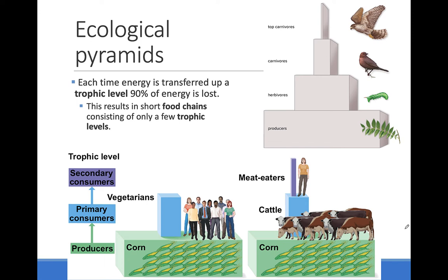When humans eat the plants directly, much more energy can be harnessed, allowing the same amount of corn to feed more people. This is the reason climate scientists advocate for eating less meat, as a helpful thing to do to reduce your carbon footprint. This doesn't mean everyone becoming a vegetarian. If more people ate no meat a few days a week, it would make a big difference in energy use and carbon emissions.